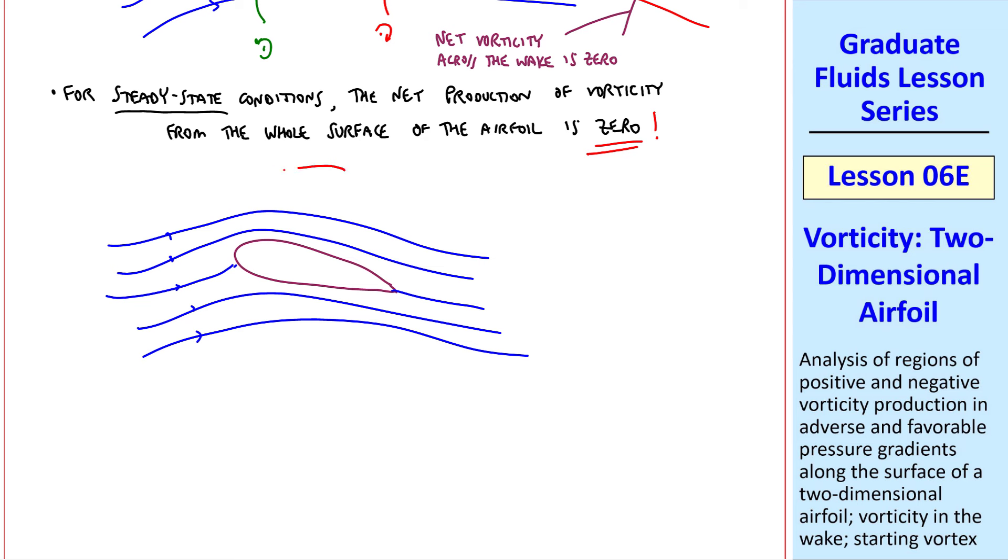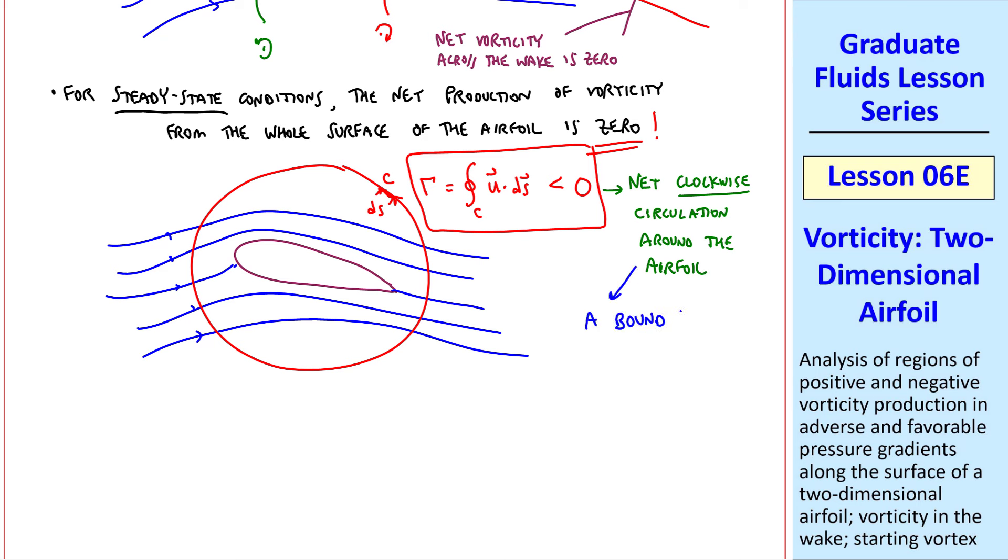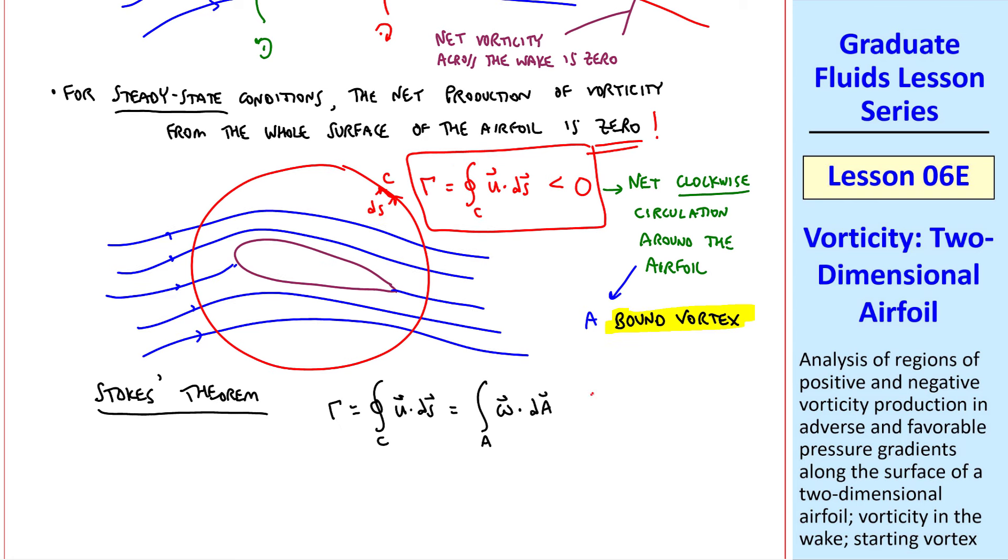To further confuse us, we can calculate the net circulation around this airfoil. Γ is the line integral over some closed area c of u·ds, and you might expect this to be zero because of this statement, but it turns out that Γ is negative, which means there's a net clockwise circulation around the airfoil. Aerodynamicists call this a bound vortex. Recall Stokes' theorem, which says we can write the circulation as an area integral of ω·dA, where the area is inside this contour, but this also must be less than zero because of this bound vortex.